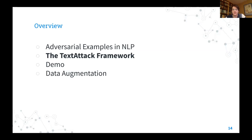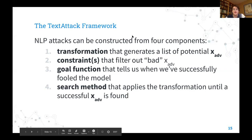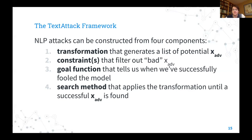The TextAttack framework says that NLP attacks are constructed from four components: transformation, which generates a list of potential perturbations like synonym substitutions; constraints, which filter out perturbations we don't want; the goal function, which tells us when to stop; and the search method, which takes the list of potential perturbations and applies the transformation again to the most promising ones when the goal function isn't fulfilled. Now we're going to look at an attack from the literature and how we'd implement it within TextAttack, and then do the demo.